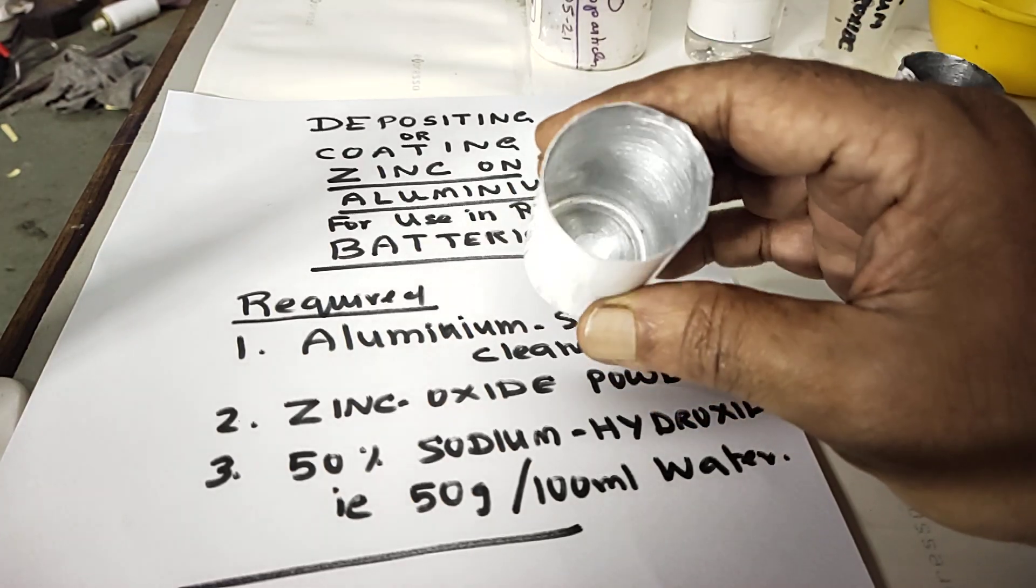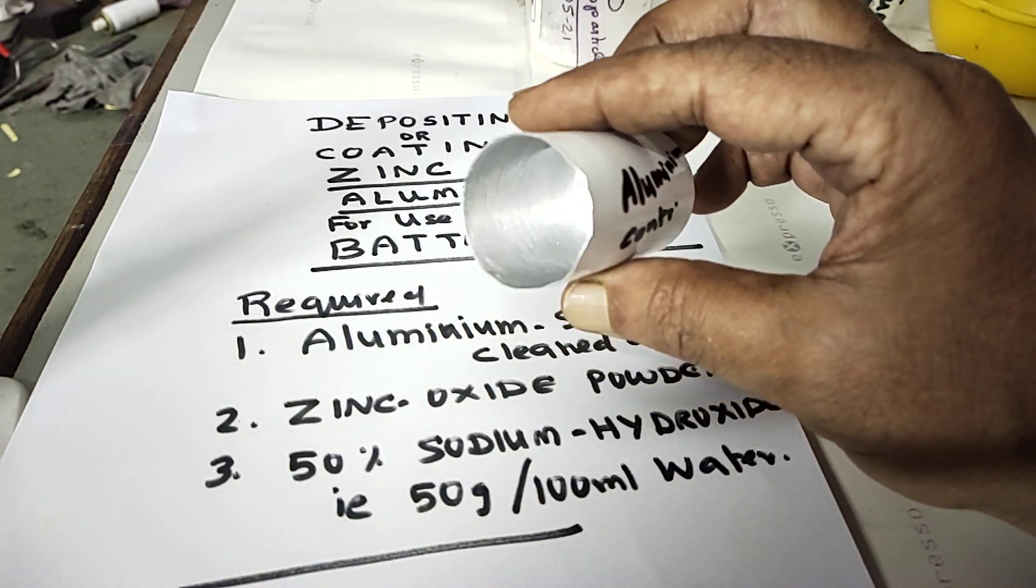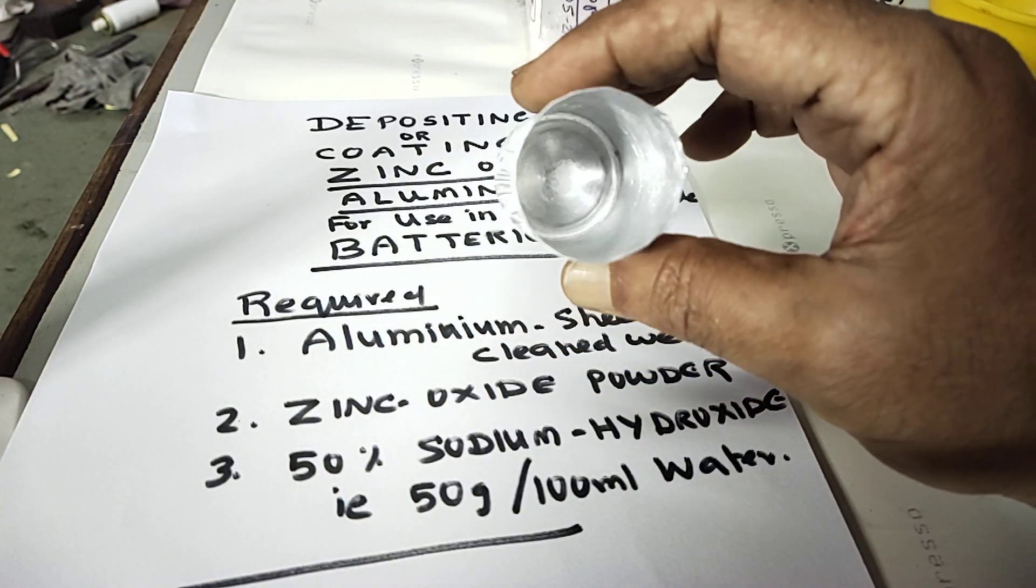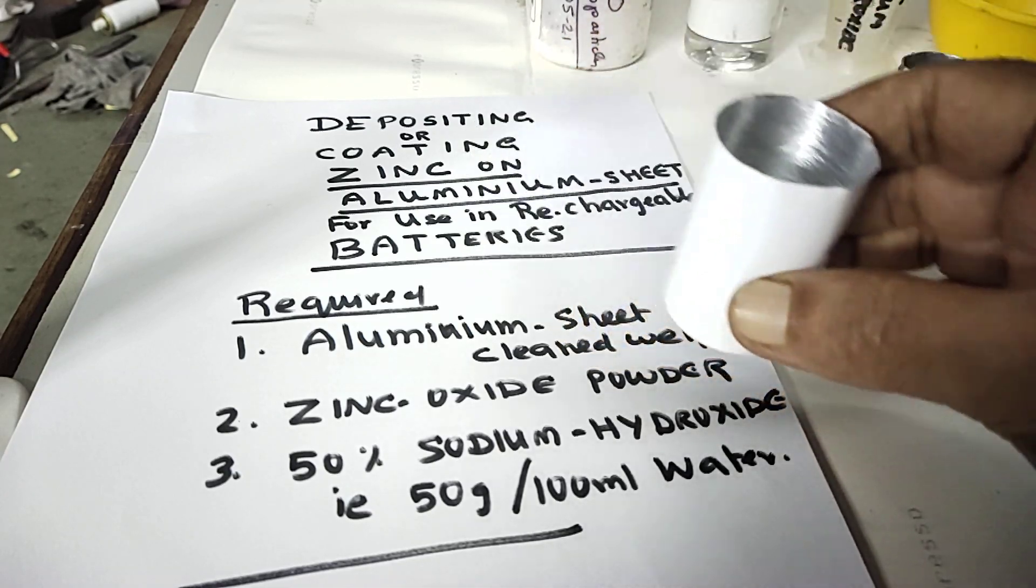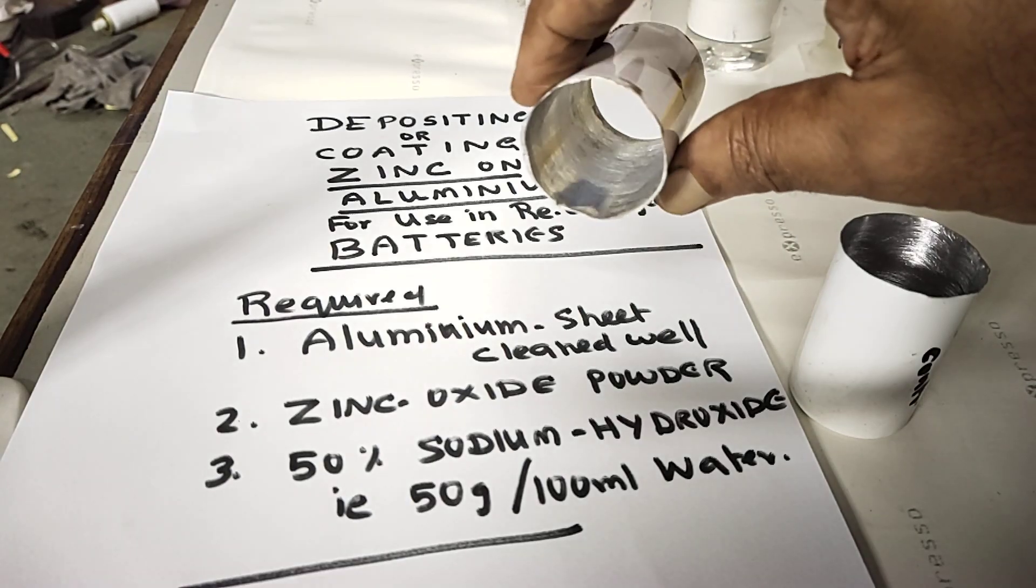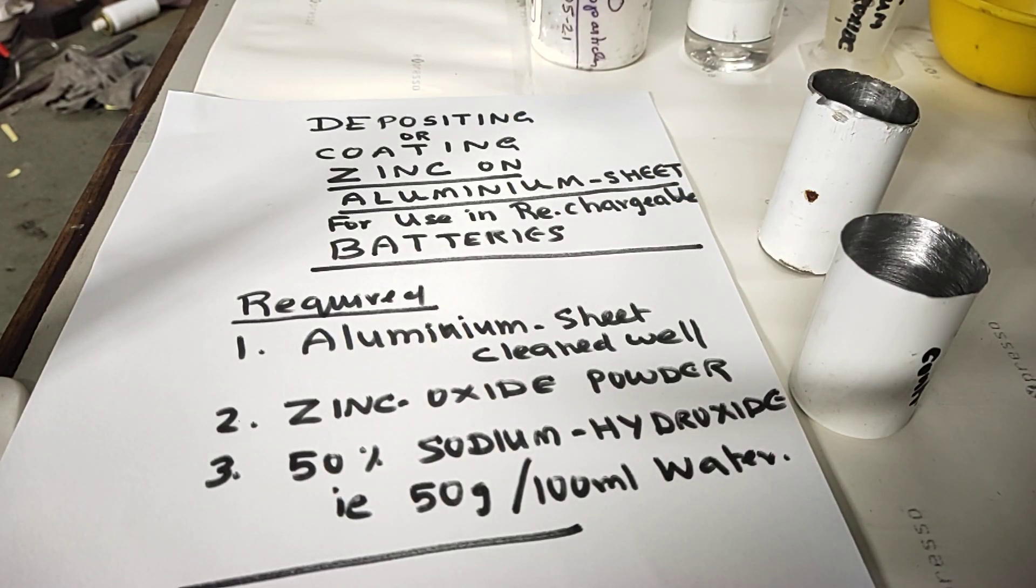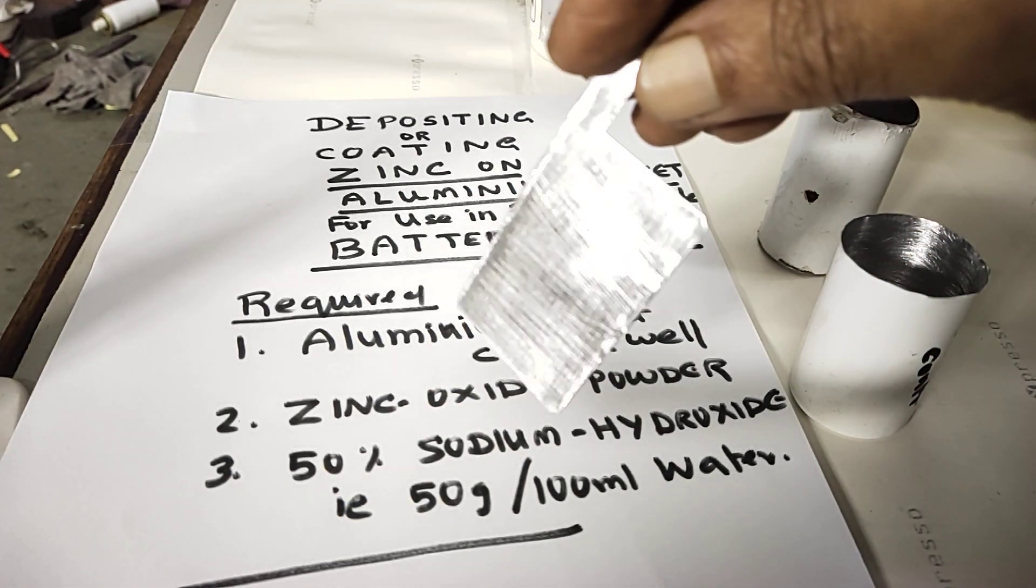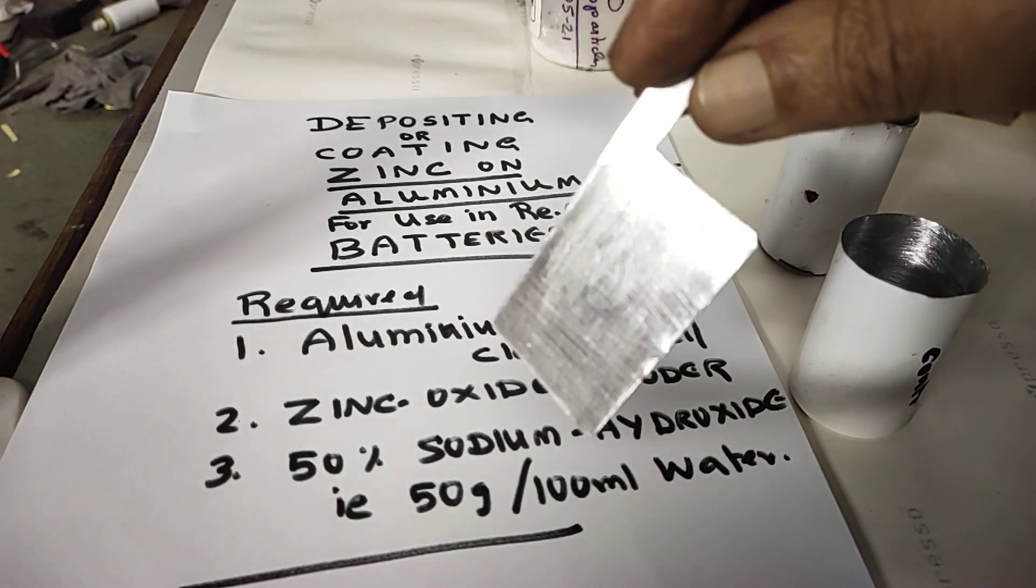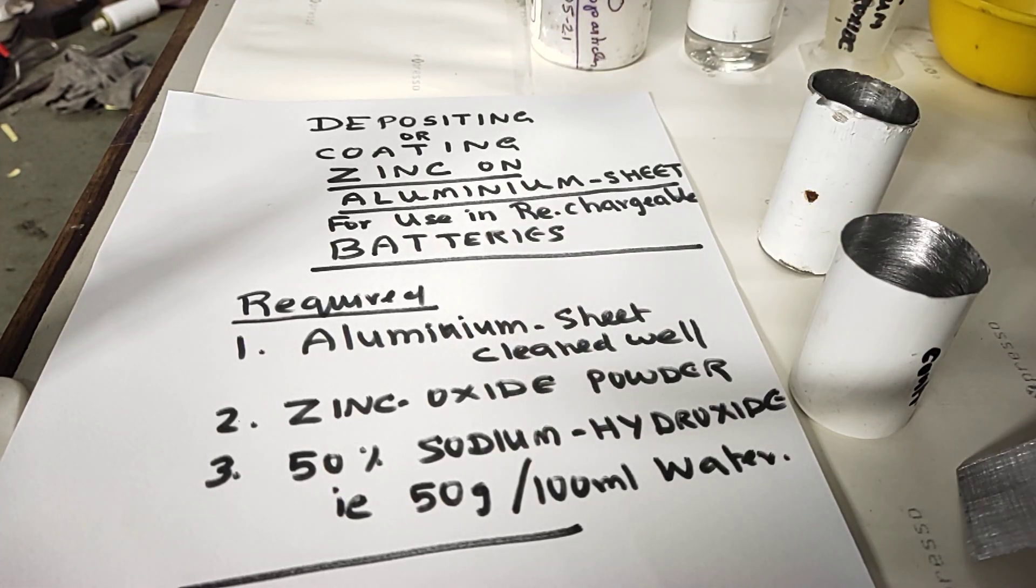This is an aluminum container. I already cleaned it using emery paper to remove all the unwanted material on the surface. This is an open container, I am showing it. Similarly, I have got an aluminum sheet. Here also I have polished it so that you can give a better zinc coating on top of that. It is an electroless coating.